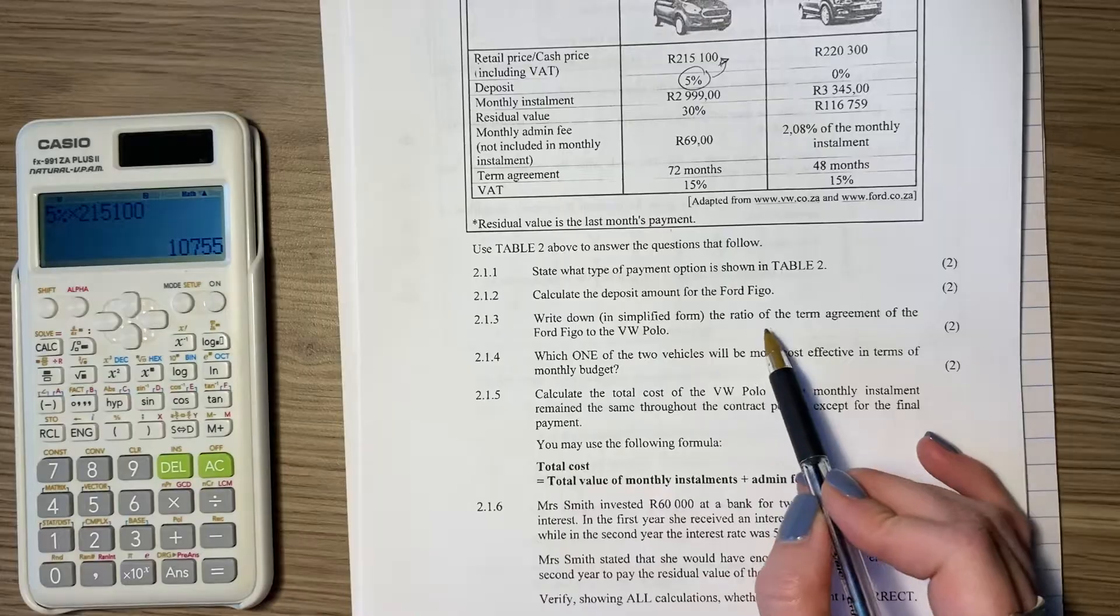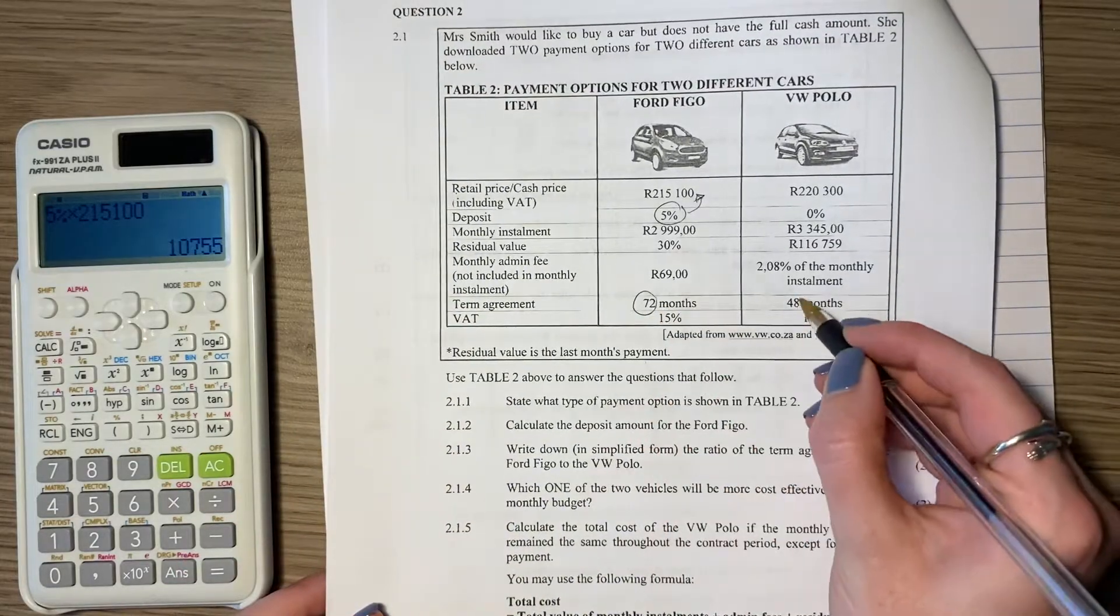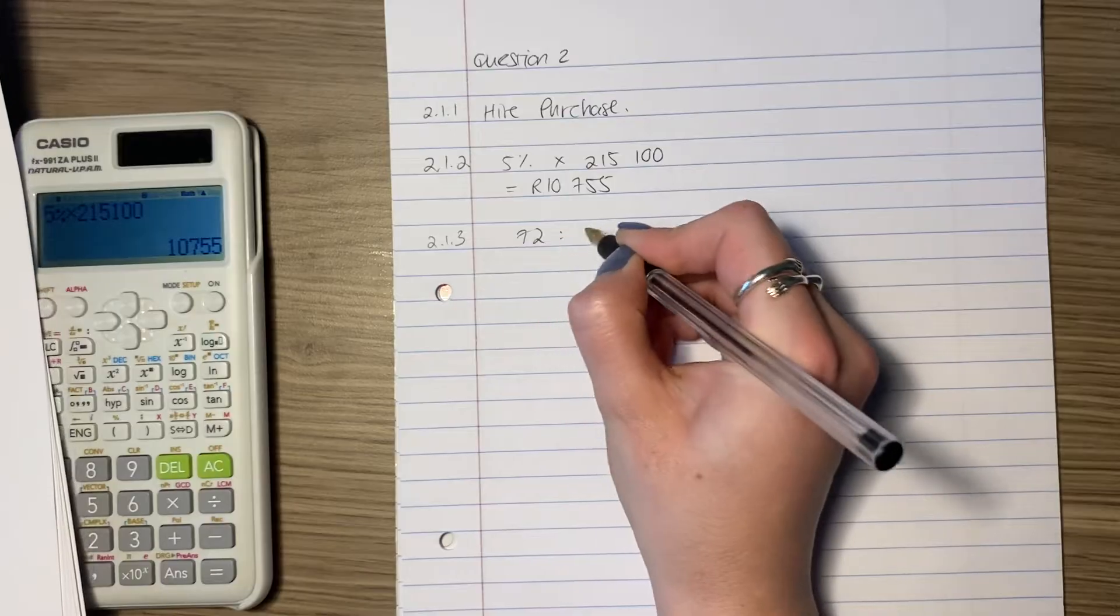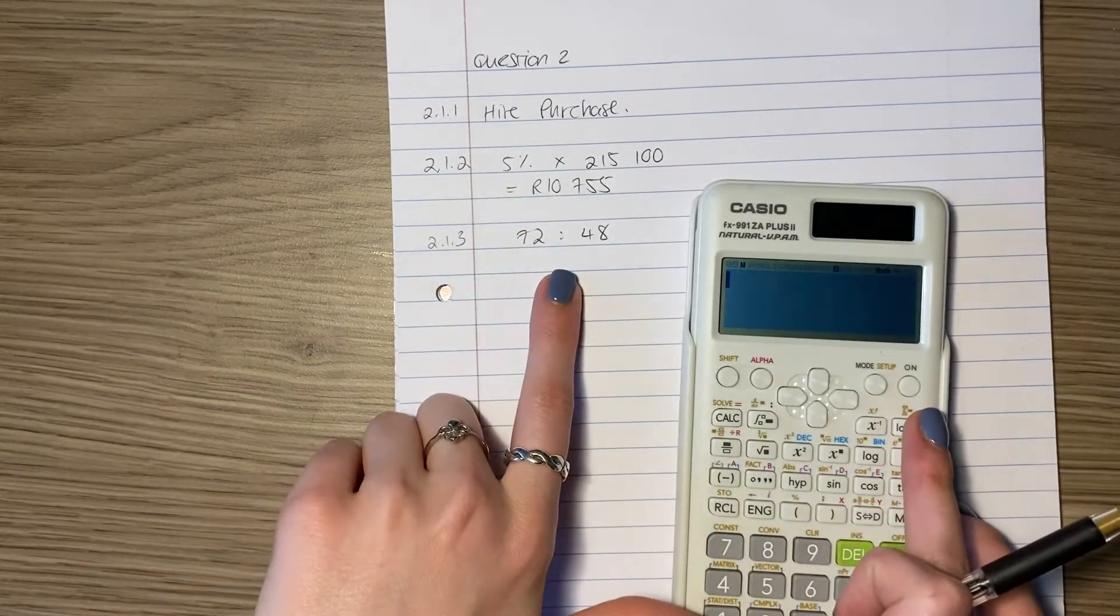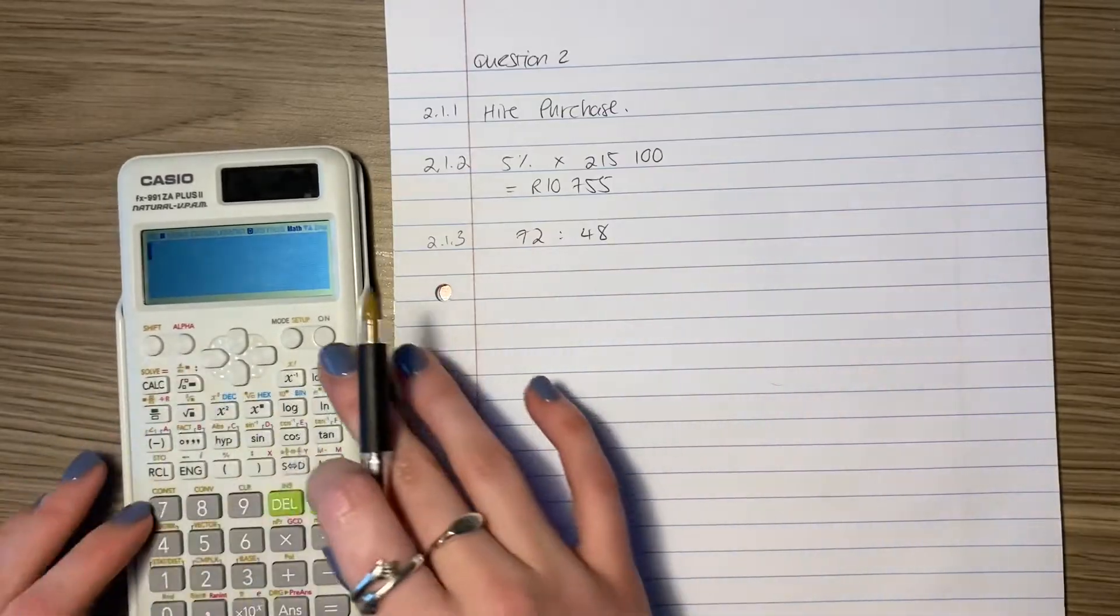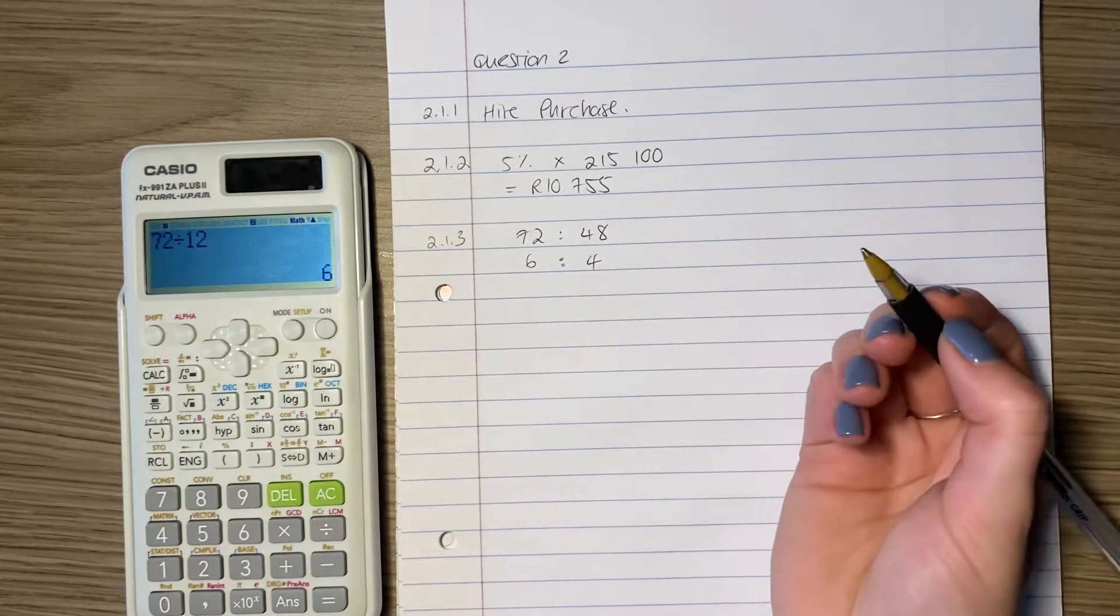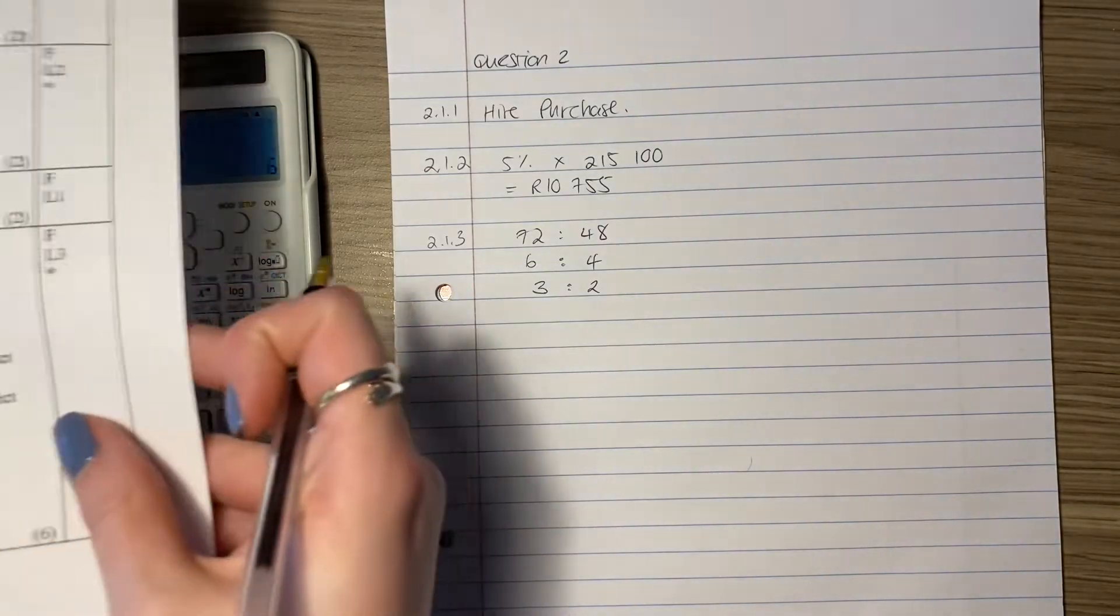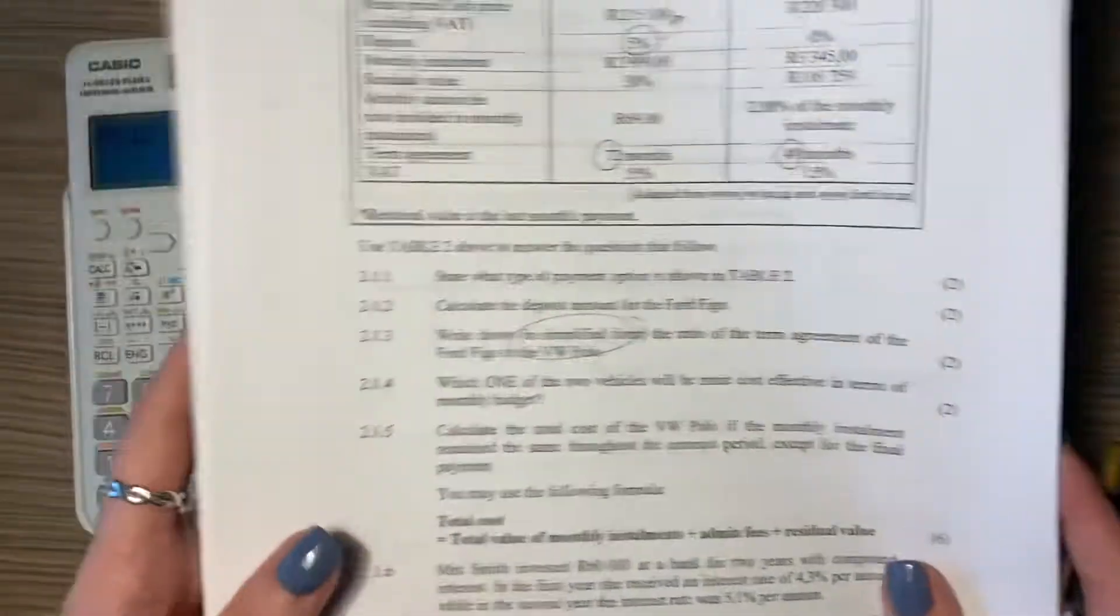It says write, in simplified form, the ratio of the term agreement of the Ford Figo to the VW Polo. So we're basically saying the term is the 72 to 48. It did say the Figo to the VW, so don't mix them up. You have to say 72 to 48. And what did it say? In simplified form. So simplified form just means that there isn't a number that can go into both sides in order to make it smaller, but still keep it as a whole number. If your times tables are good, which I hope they are, 12 is a pretty good option here. So if you divide each of those by 12, you'll get that. You'll see then that 2 actually goes further into each of them. So the most simplified version is 3 to 2.